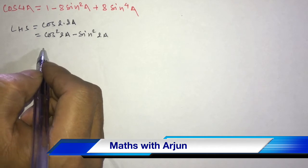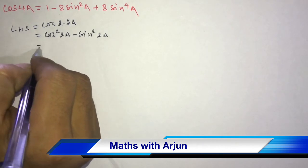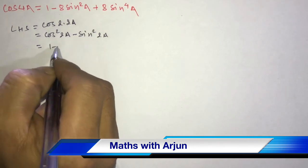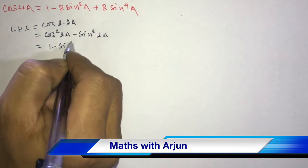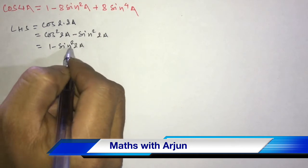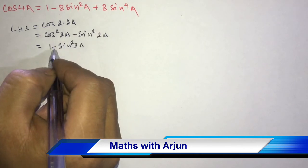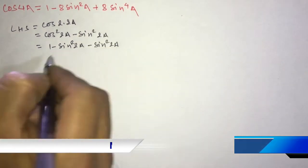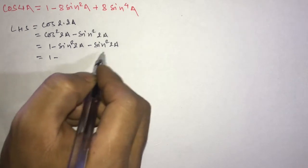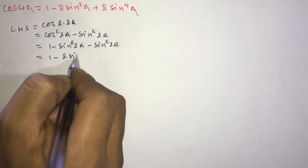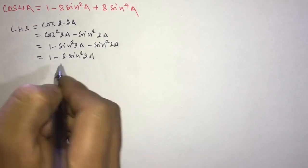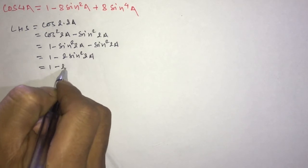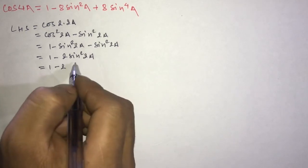This equals cos squared 2a minus sine squared 2a. Now change cos squared 2a into 1 minus sine squared 2a. So we get 1 minus sine squared 2a minus sine squared 2a, which gives us 1 minus 2 sine squared 2a.